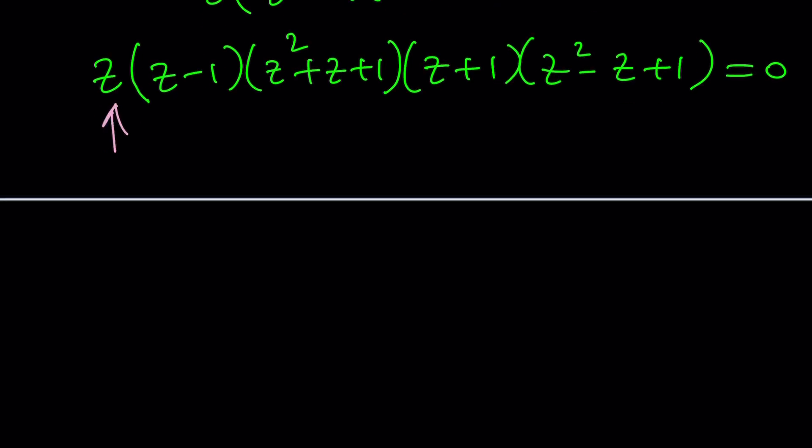Now look at each factor set equal to zero. From here you get z equals zero. From here you get z equals one. From here you get z equals negative one. These will give you the cube roots of one and negative one in different forms and you can find the rest.